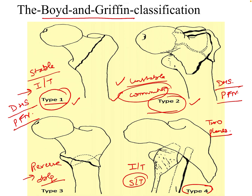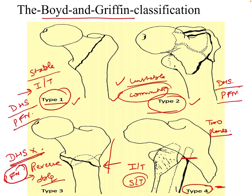In type 3, reverse oblique fractures, there is loss of continuity of the lateral wall, so the DHS is a failure and it should be managed by proximal femoral nail. In type 4, there is again loss of continuity of the lateral wall, so the implant of choice is again proximal femoral nail. DHS is contraindicated in both type 3 and type 4 fractures.